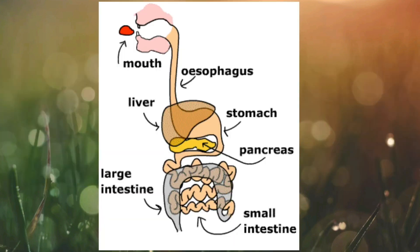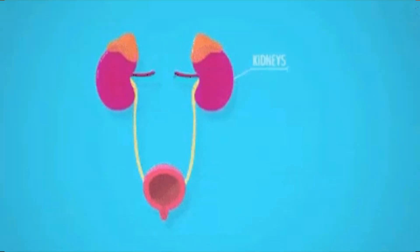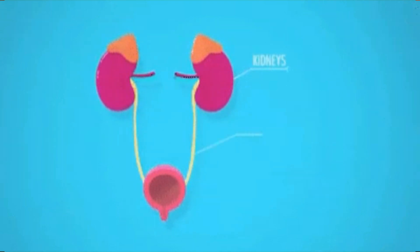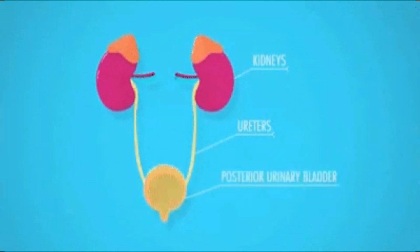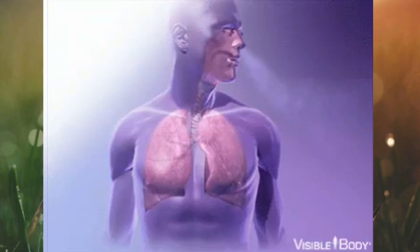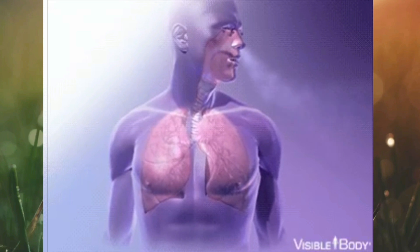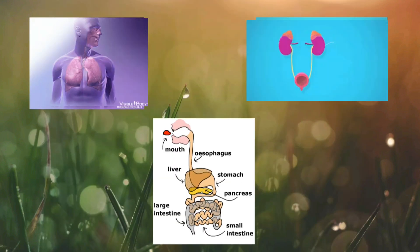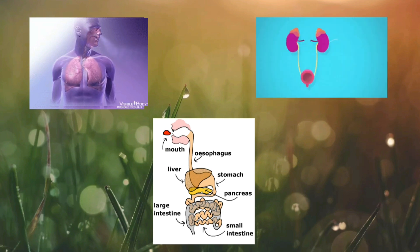We get energy for our daily activities from the food we eat. The food is broken down into simpler form through the process called digestion. After we eat the food, waste products are removed from the body in the form of sweat and urine — the process involved in this is called excretion. We need oxygen to live, and our body gets oxygen through the process called respiration. These processes are carried out by different organs in our body.